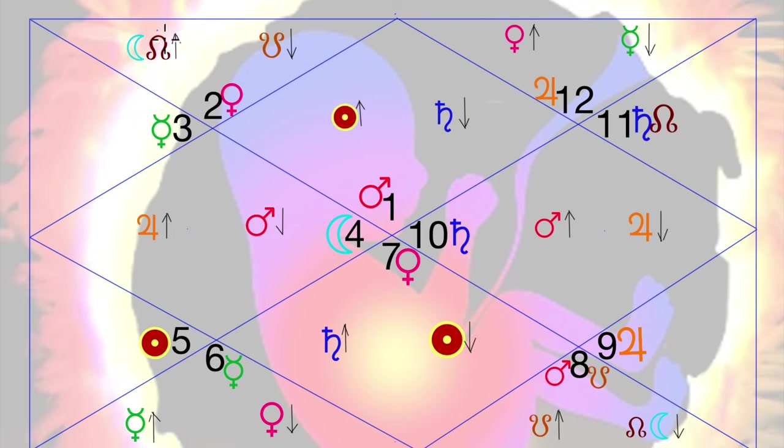This is the south node of the Moon called Ketu. That is the symbology of Saturn. That pretty much finishes it. So these are the symbols we are going to use.